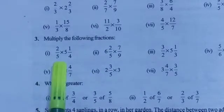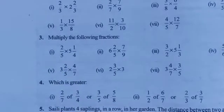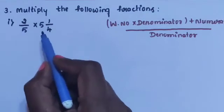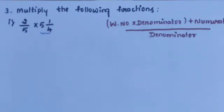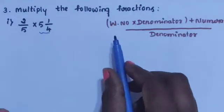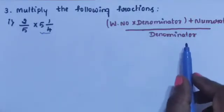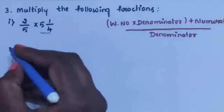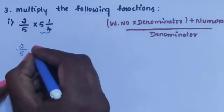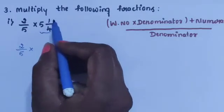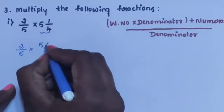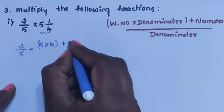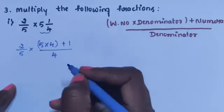Sub-question 1: 2/5 into 5¼. 5¼ is a mixed fraction, convert into improper fraction using the formula: whole number into denominator plus numerator, divided by denominator. 5 is the whole number, 1 is the numerator, and 4 is the denominator. So 5 × 4 + 1 divided by 4.